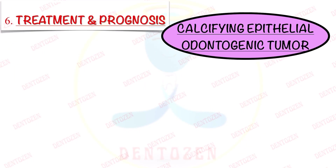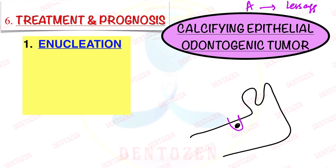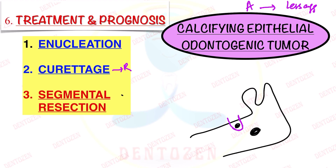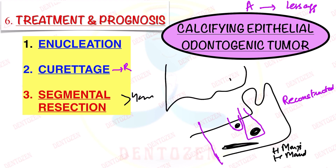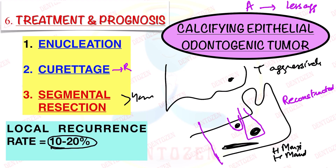Originally it was thought this tumor behaves like ameloblastoma, but with accumulating evidence it is shown to be less aggressive. If the tumor is small, we can do enucleation with judicious removal of adjacent bony margins, or curettage — though recurrence has been seen with curettage. If it is large, more than 4 cm, segmental resection can be done. If quite extensive, hemimandibulectomy or hemimaxillectomy may be required, followed by reconstructive procedures with plates or grafts. Maxillary tumors should be treated more aggressively. With local conservative removal, a recurrence rate of 10–20% has been observed, but overall prognosis is good. Malignant transformation can occur but is very rare.